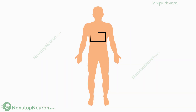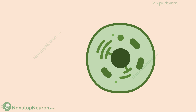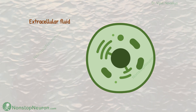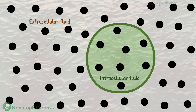In our body, we broadly have two fluid compartments. One is the extracellular fluid, and the other is intracellular fluid. Both these fluids are at osmotic equilibrium. Normally, they both have an osmolarity of about 300 milliosmol per litre, so there is no net movement of water. The extracellular fluid is said to be isotonic with respect to the cell.